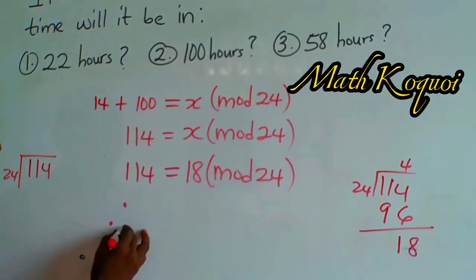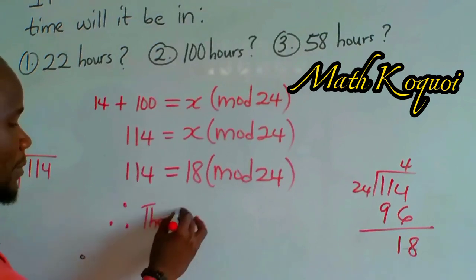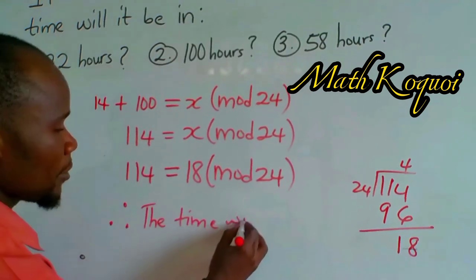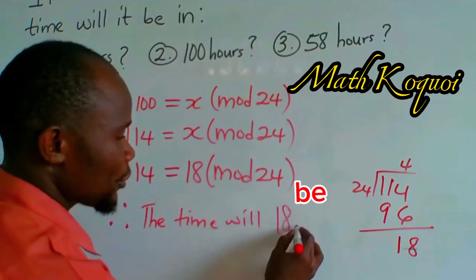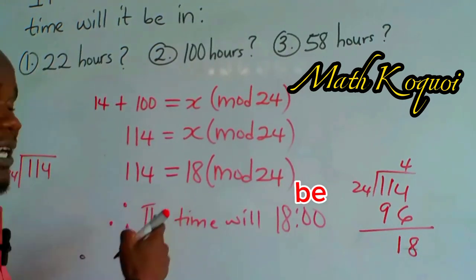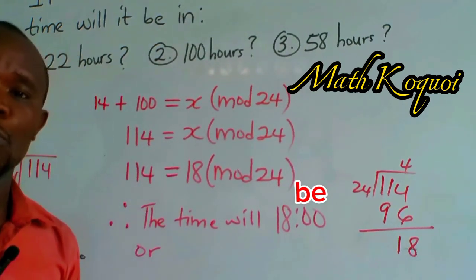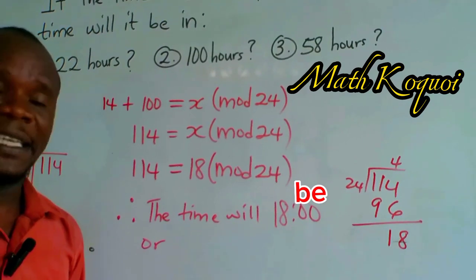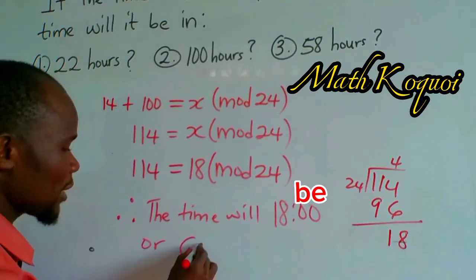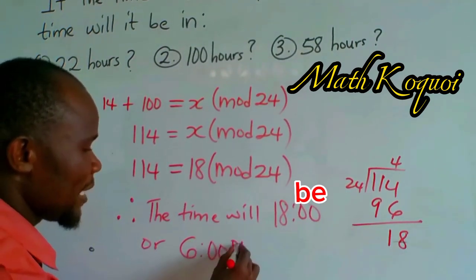Therefore, the time will be 18 hours. Now this 18 hours can be converted to local time. So in local time, 18 hours is 6 o'clock PM.